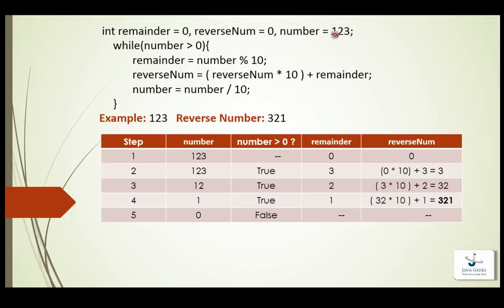Number is now 12. Number 12 is greater than 0 — true — so again remainder equals number mod 10: 12 mod 10 gives us 2. Reverse number equals reverse number multiplied by 10 — in the previous step reverse number was 3, so 3 multiplied by 10 becomes 30 — plus remainder 2, so 30 plus 2 equals 32. Now reverse number is 32.